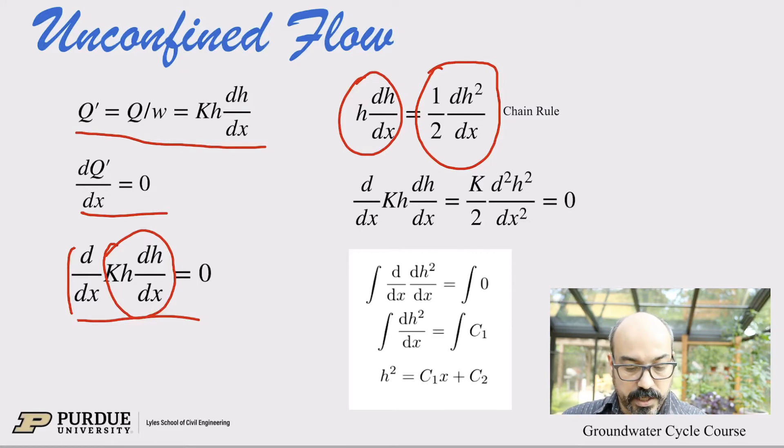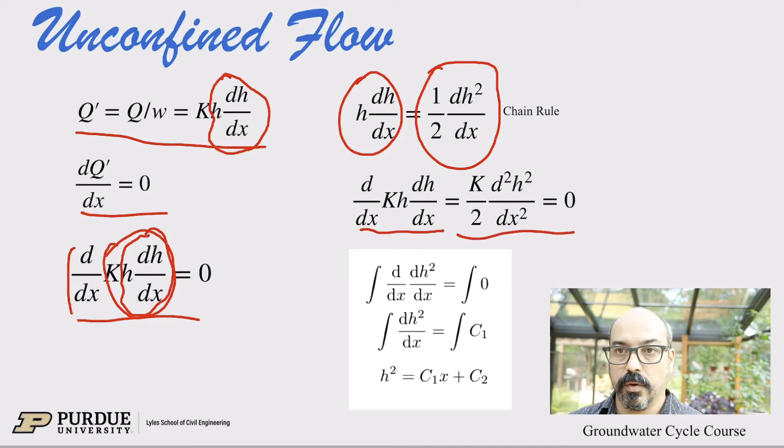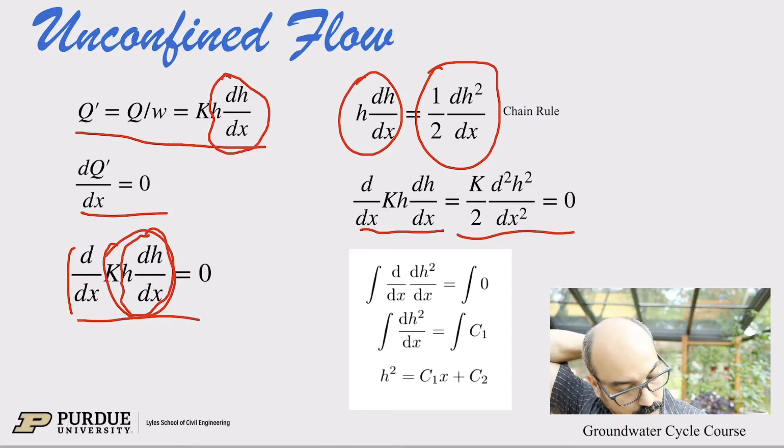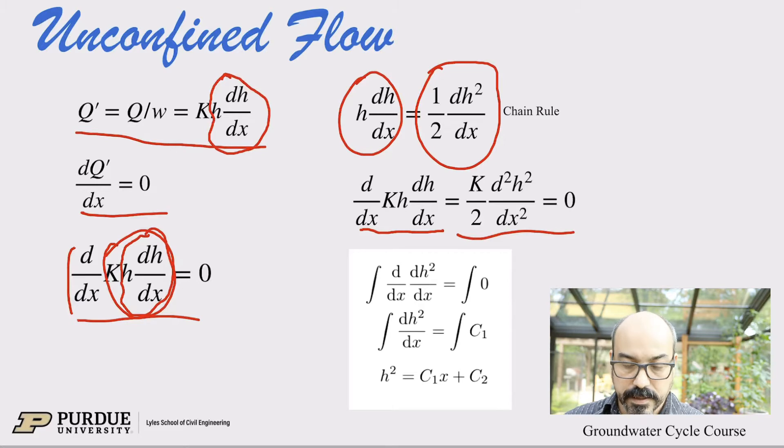So now if we replace h dh/dx in our Q' or here, h dh/dx, if you will replace it by that 1/2 dh²/dx. So here's the original, here is the replaced version. So we just replace that thing by 1/2 d h squared dx. Again, so now we have d/dx times dh²/dx, that gives us the d²h²/dx², and then K over 2 is a constant. So we leave it out. So the K comes from here and the 2 comes from here. Okay.